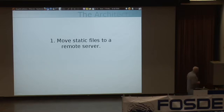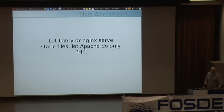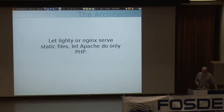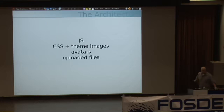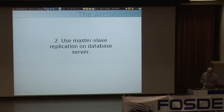One is that we move static files off of our Apache system and into a CDN or just a remote server. We let Nginx or Lighttpd serve our static files and keep Apache just for doing PHP. This really lets our Apache systems go crazy — we move practically everything that doesn't have a heartbeat off onto external servers.